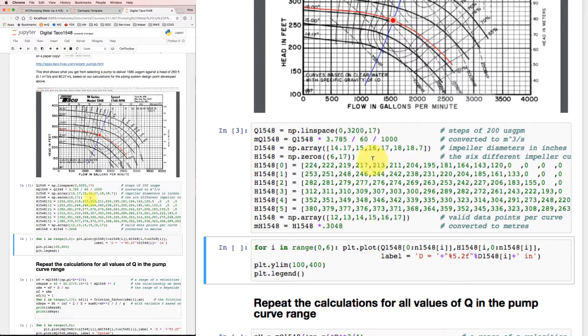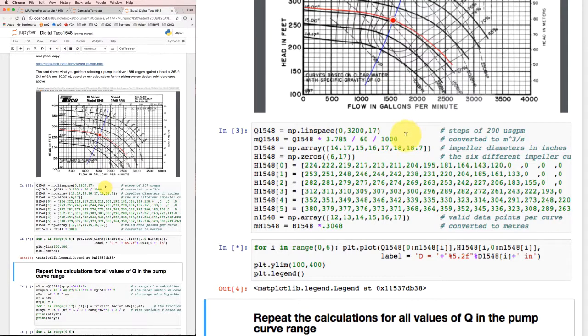So I'm going to make a plot of it. For I in the range from 0 to 6, for all six of these different lines for the different impellers, I'm going to plot the flow against the head. And I'm going to go over a range from 0 up to the number of valid points in the array for that particular impeller. And I'm going to do this for impeller 0, impeller 1, impeller 2, and so on, all the way up. And I'm going to give them labels. So let's run that plot.